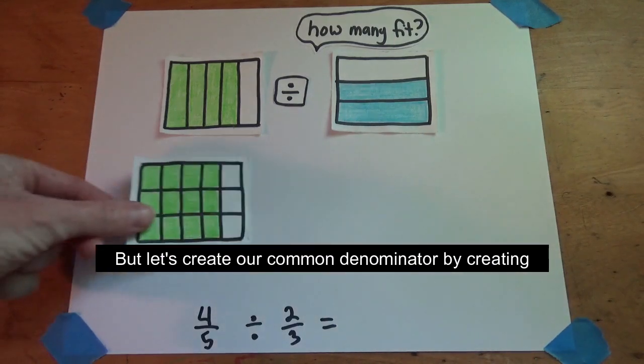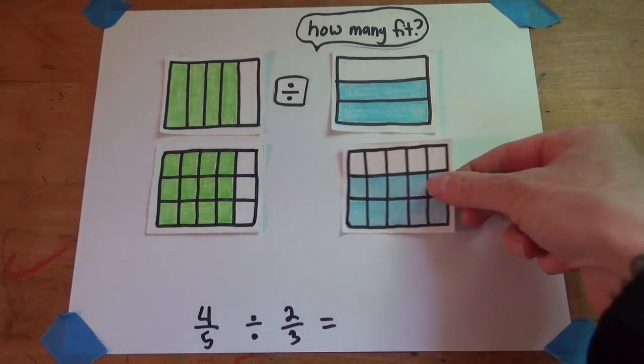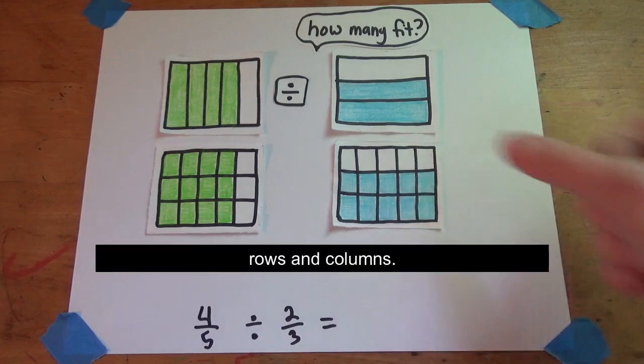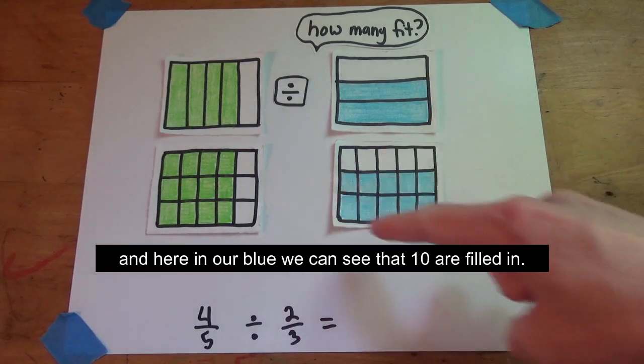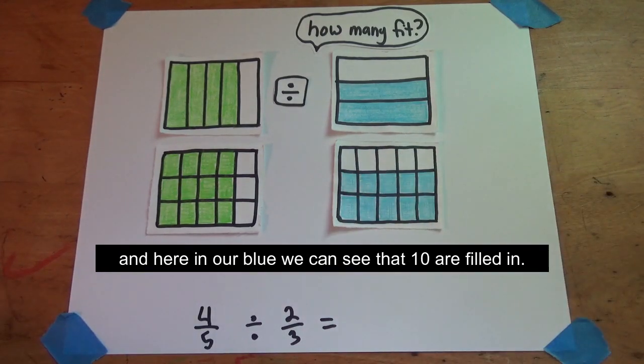Let's create our common denominator by creating rows and columns. Here we can see that 12 of our green boxes are filled in, and in our blue we can see that 10 are filled in.